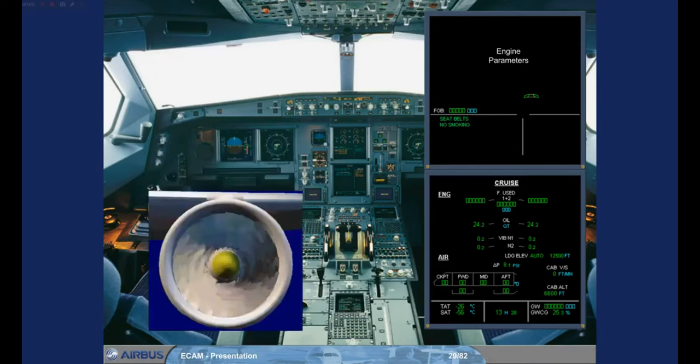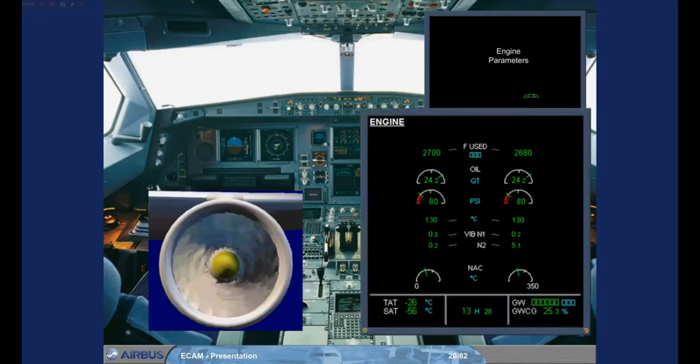If a system parameter, for example an engine vibration level, approaches a limit, the ECAM system will advise you of this by displaying the relevant system page on the System Display. The affected parameter will pulse. Notice that at this stage the parameter is still shown in green since it is still within normal limits. This is known as an ECAM advisory.